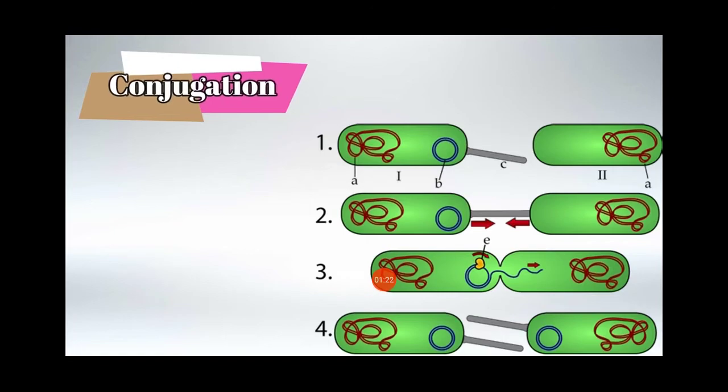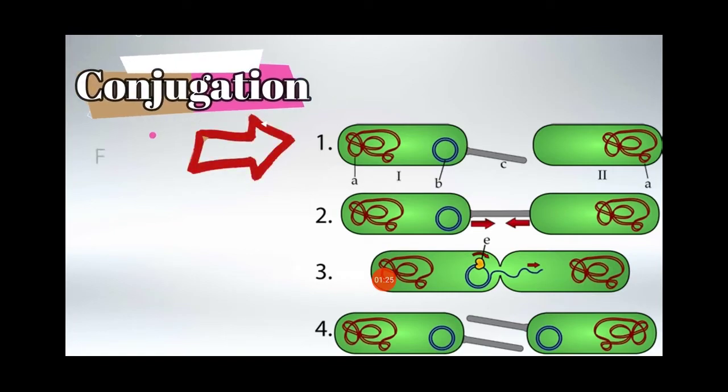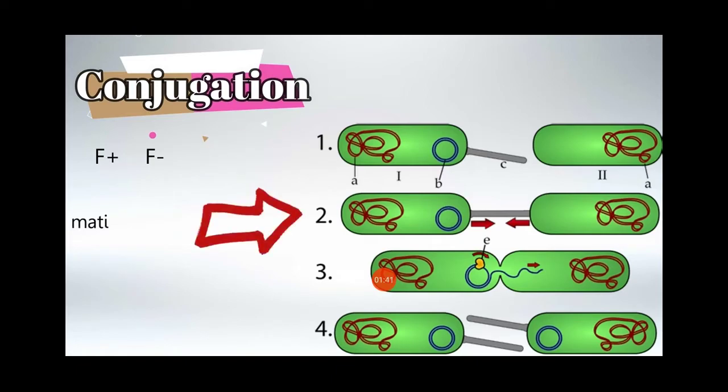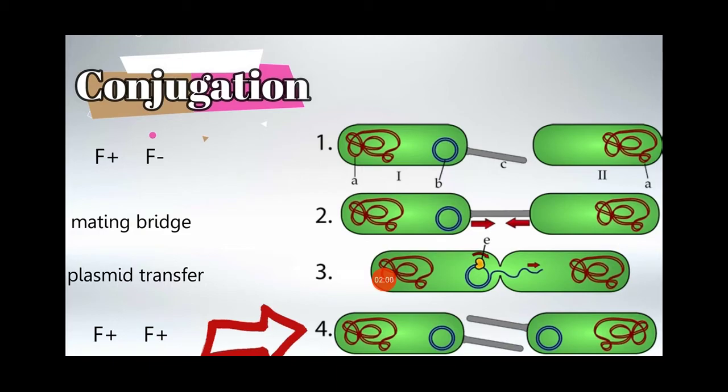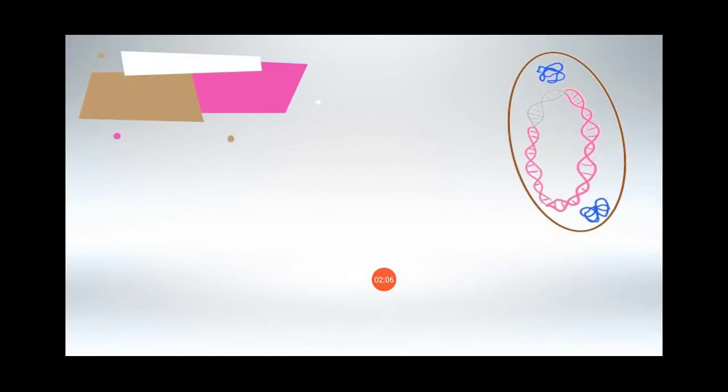Conjugation is the process involving F-positive bacteria and F-negative bacteria. In this process, bacterial DNA is transferred. This is called conjugation, and in this process both bacteria become F-positive bacteria.